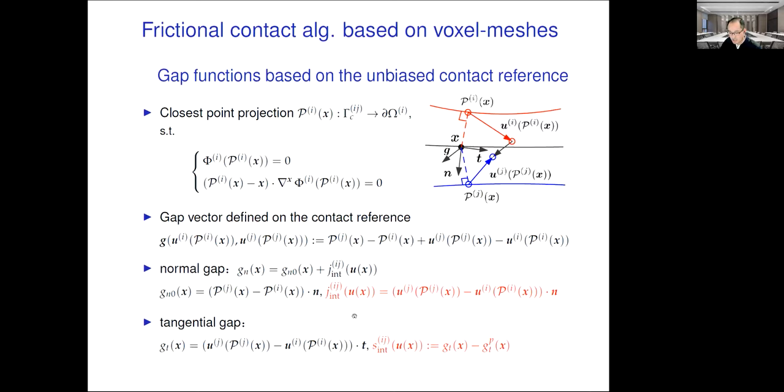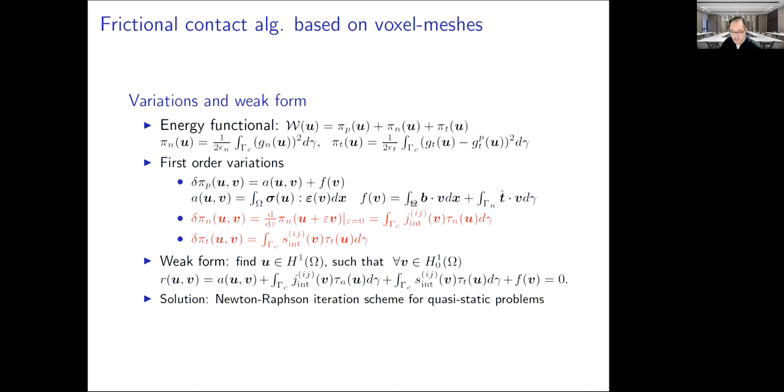We further divide the normal gap into two parts. One is independent of displacement, and the other is related to displacement. The treatment is used for the variation operations. In summary, we compute the first-order variations of each term in the energy function to derive the weak form and use the Newton-Raphson iteration scheme to solve the quasi-static problems.